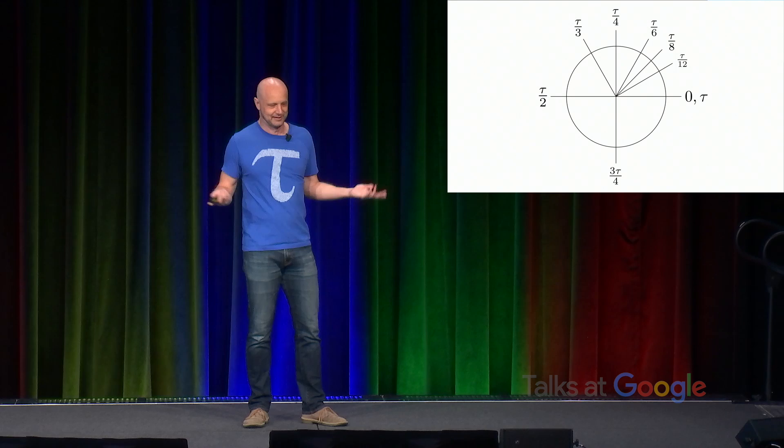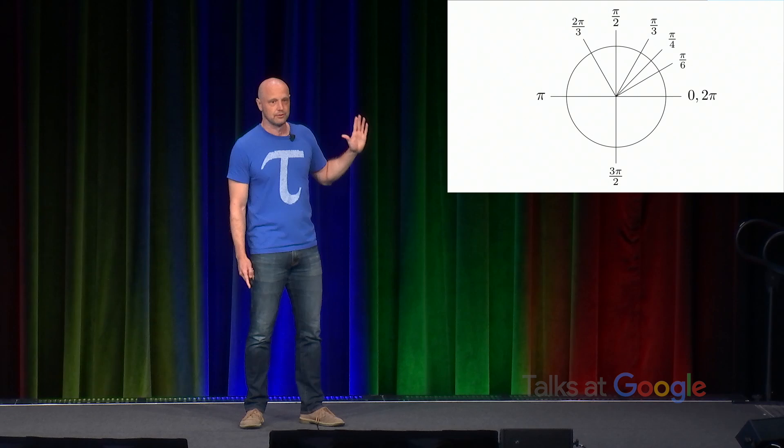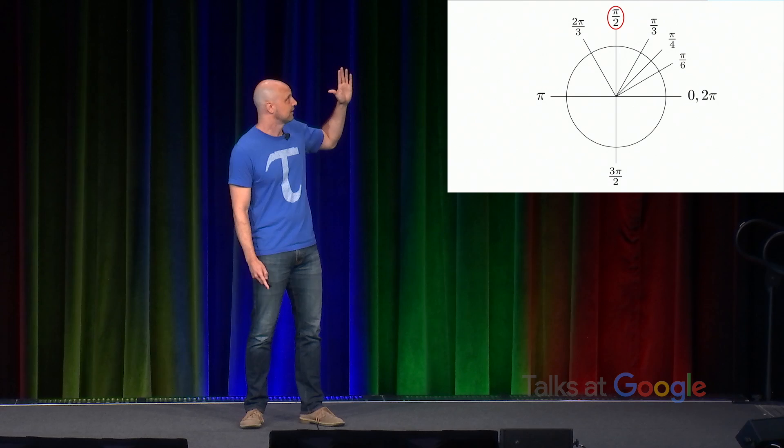So to me, this is just a one diagram proof that tau is the right circle constant. There's just, there's no way around it. And if you compare it to the diagram with pi, you can see what's going on here. What's happening here is, for example, at a right angle, that's the 2 pi divided by 4, but that cancels. The 2's cancel, and we get pi over 2. So we have a quarter of something is equal to a half of pi. And that's really confusing.